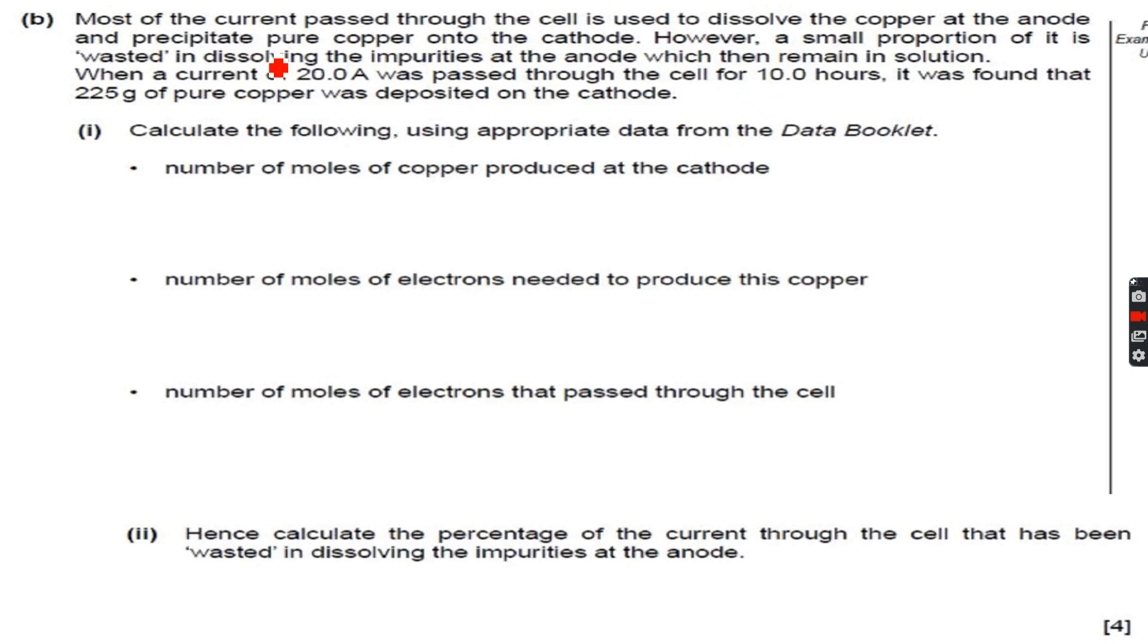When a current of 20 amps was passed through the cell for 10 hours, it was found that 225 grams of pure copper was deposited on the cathode. This is the important part; the rest of the question is just a story, but this is where all the values are.